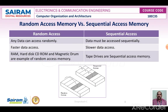Random access memory versus sequential access memory: in random access, any data can be accessed randomly. For example, if we want to access the fifth data, we can jump directly to the fifth memory location and retrieve the information. In sequential access, data must be accessed sequentially — to access the fifth data, we have to cross the first, second, and third entries before we can reach it. Random access is fast data access, whereas sequential access is slower.